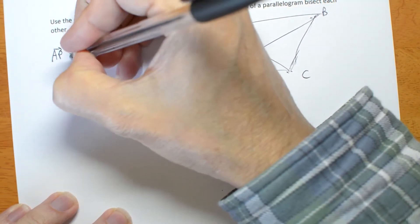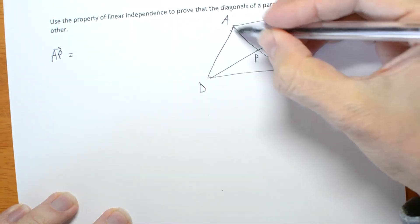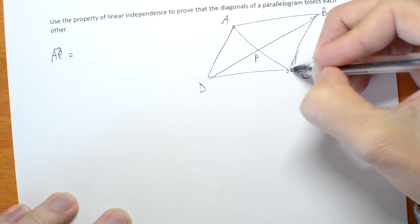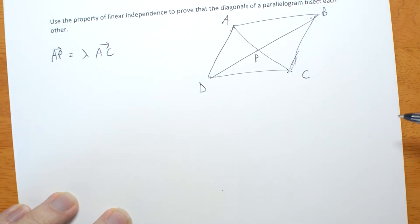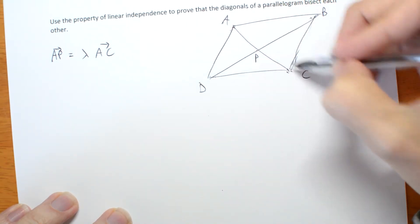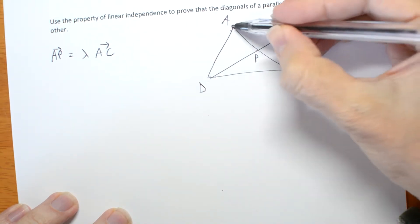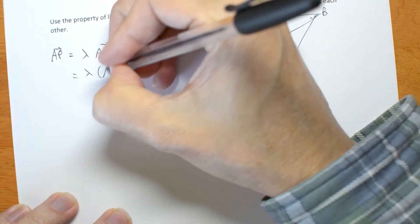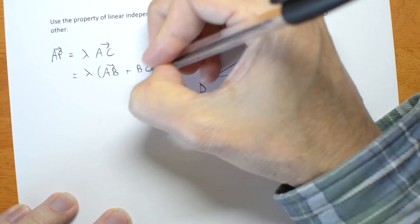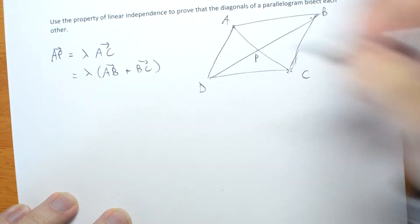The vector AP is some multiple of A to C, lambda AC. But AC is the same as A to B plus B to C, lambda AB plus BC.